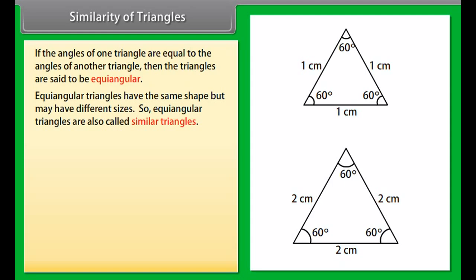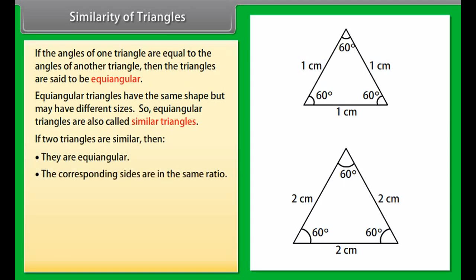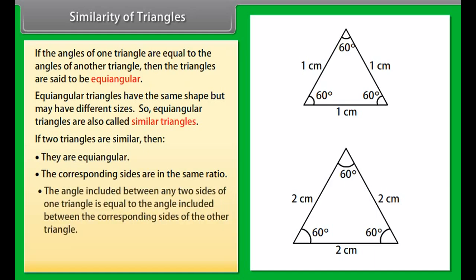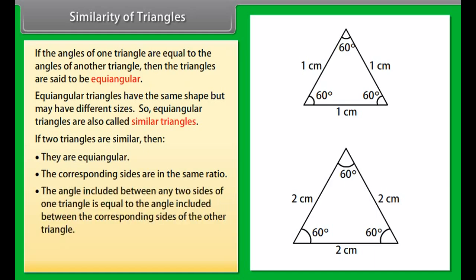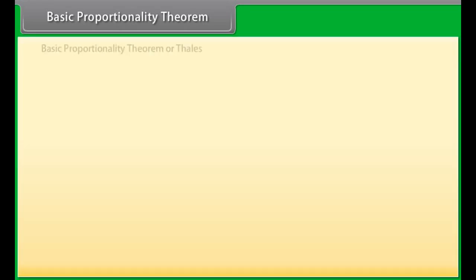If two triangles are similar, then they are equi-angular, their corresponding sides are in the same ratio, and the angle included between any two sides of one triangle is equal to the angle included between the corresponding sides of the other triangle. The ratio of any two corresponding sides in two equi-angular triangles is always the same.